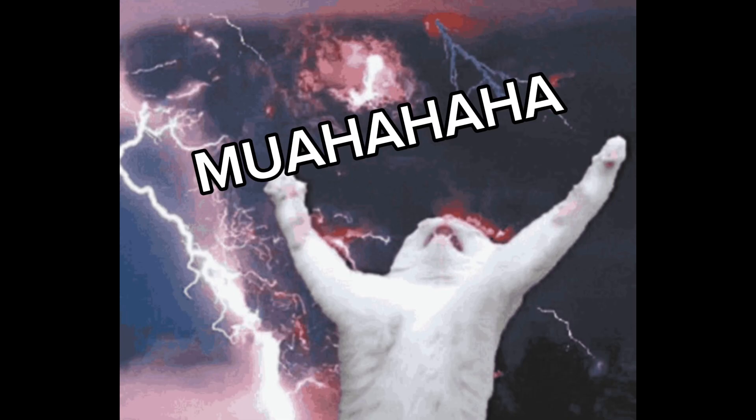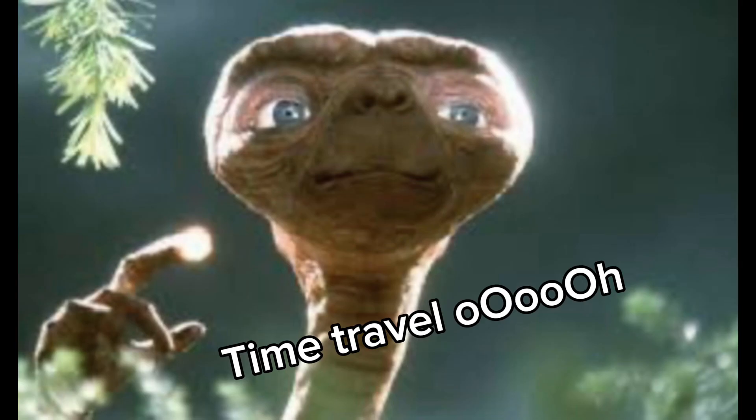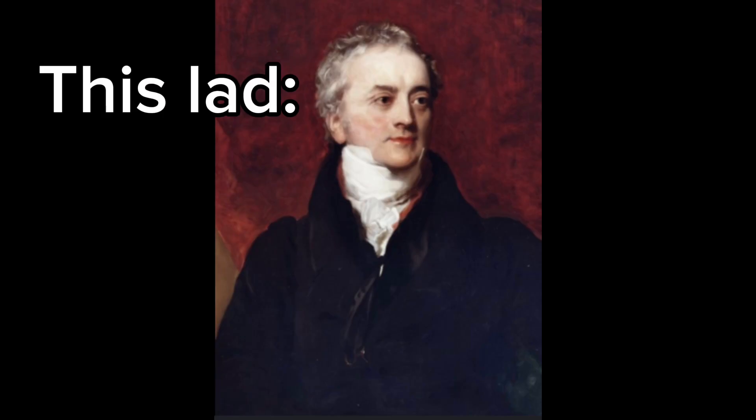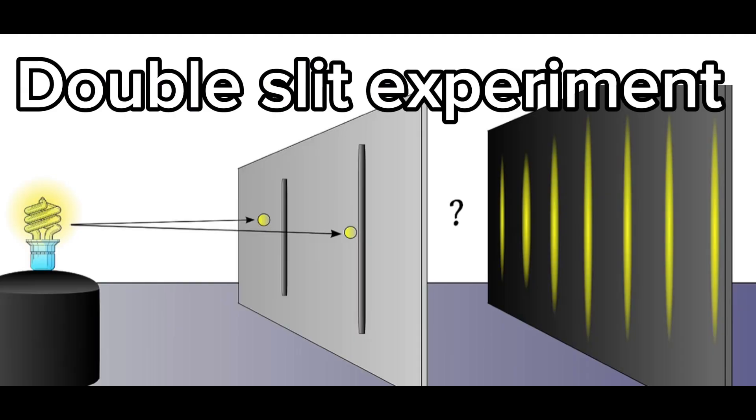This is because both of these particles are waves and particles. How could this be true? One thing can't be two at once, right? In 1801, a man named Thomas Young conducted one of the most famous experiments known to physics, known as the double slit experiment.